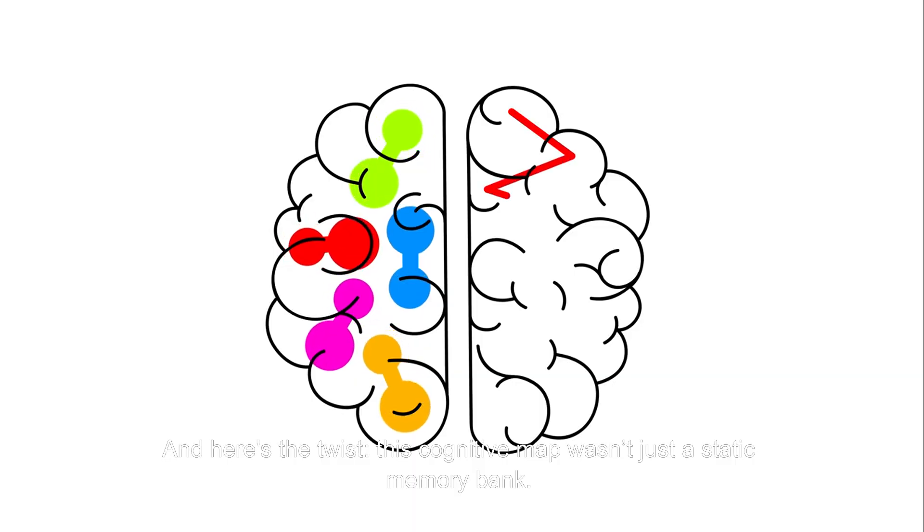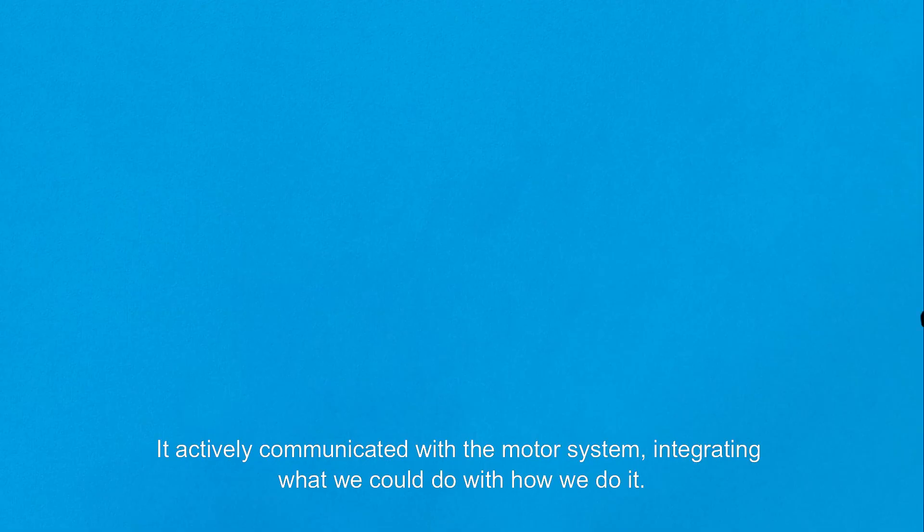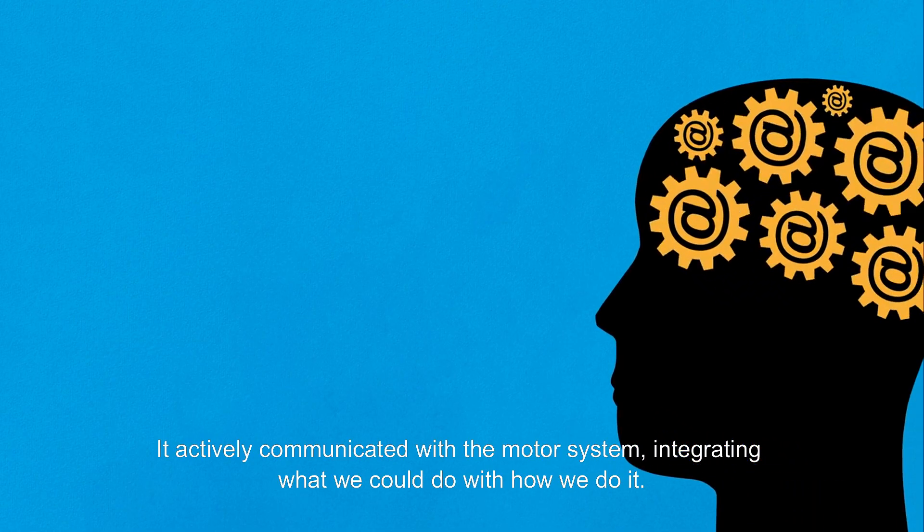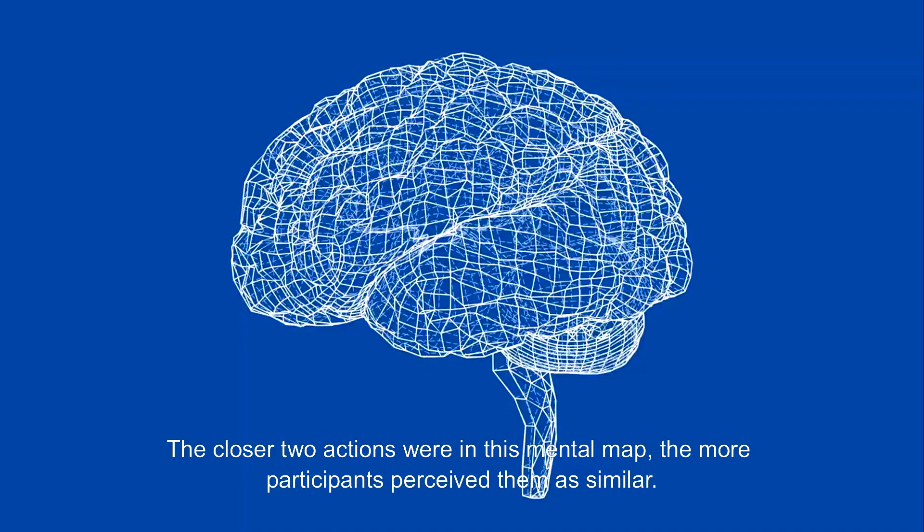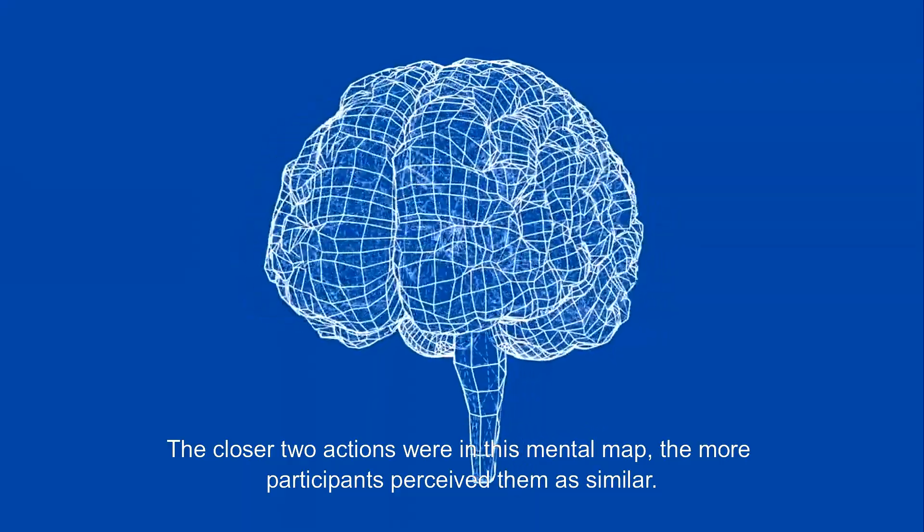And here's the twist: this cognitive map wasn't just a static memory bank. It actively communicated with the motor system, integrating what we could do with how we do it.